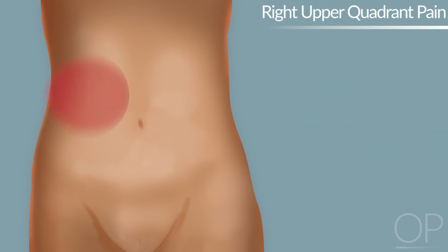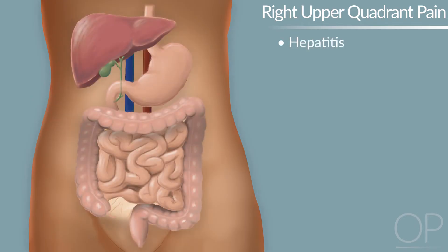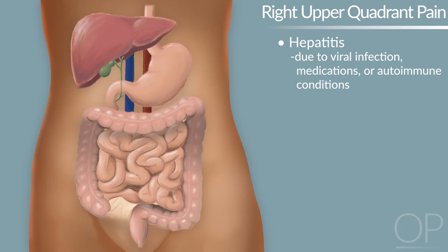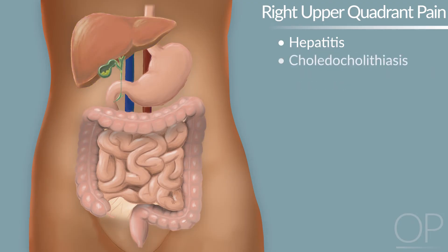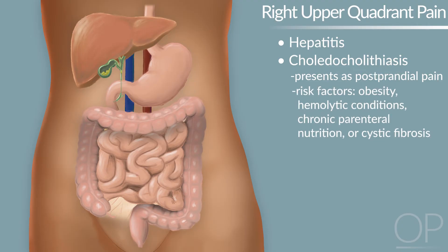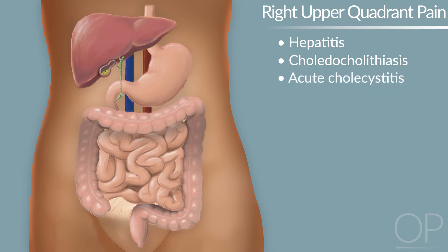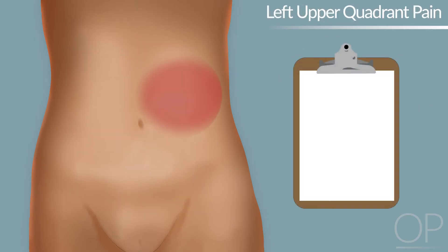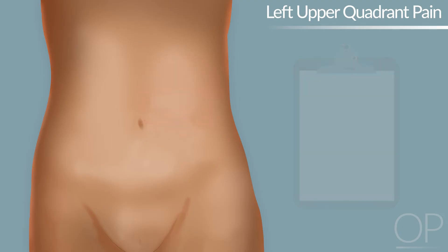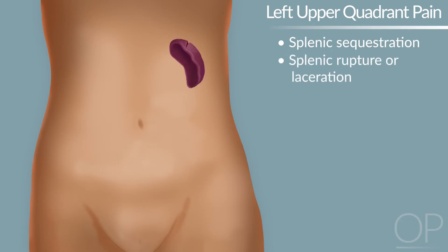Right upper quadrant pain is commonly associated with hepatic or biliary disease. Hepatitis may be due to viral infection, medications including acetaminophen toxicity, or autoimmune conditions, though these are rare and typically do not present with pain. Cholelithiasis presents as postprandial pain and most commonly occurs in patients with a predisposition such as obesity, hemolytic conditions such as sickle cell disease, chronic parenteral nutrition exposure, or cystic fibrosis. Acute cholecystitis, which is rare in pediatrics, often presents with fever and severe pain that radiates to the back or shoulder. Medical history is important in assessing left upper quadrant pain, as hemolytic disease predisposes patients to splenic sequestration and blunt force trauma can lead to splenic rupture or laceration.